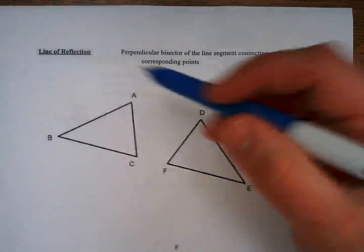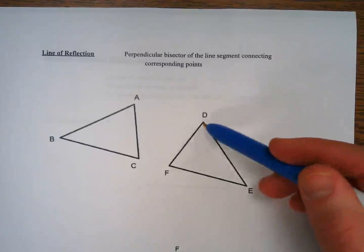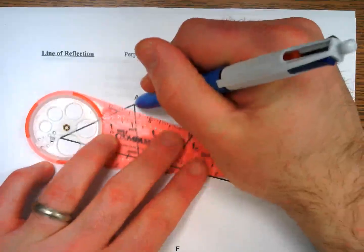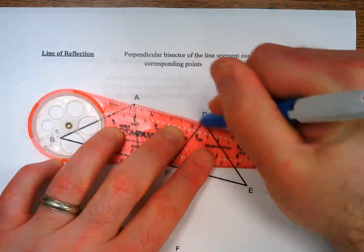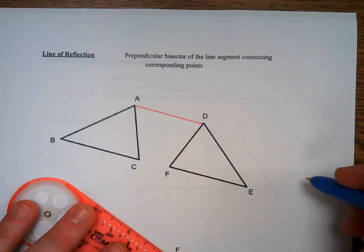What this means is that if we start with ABC, A corresponds with D. So if we connect A to D, we have a line segment connecting corresponding points. If we draw the perpendicular bisector of that line, then we get the line of reflection.